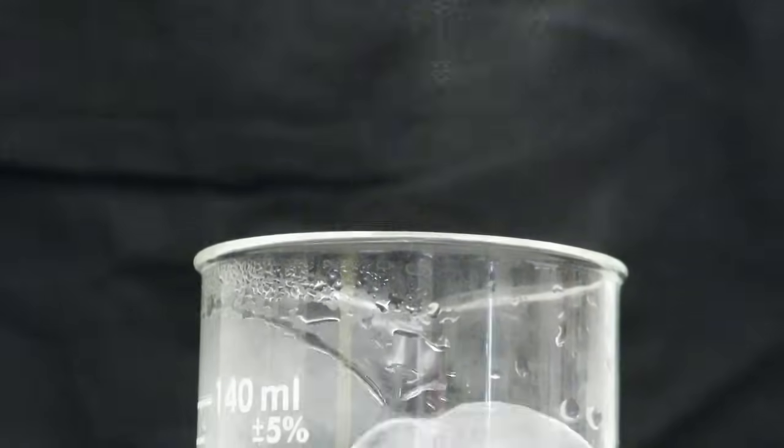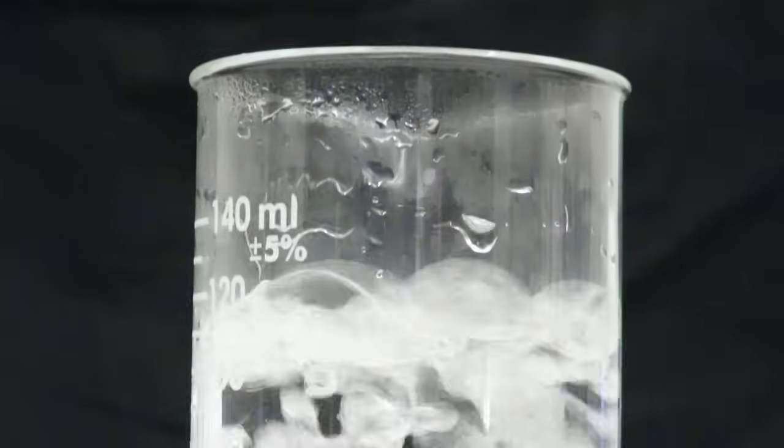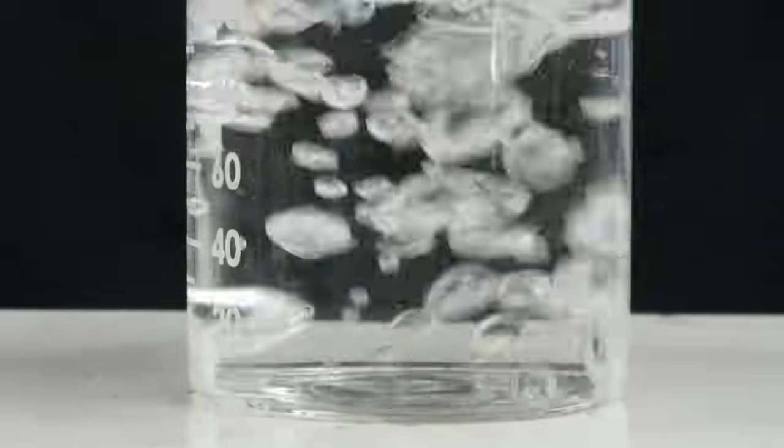One last thing. Different substances have different vapor pressures, and therefore they have different boiling points. This has to do with how strongly the molecules are attracted to each other in the liquid. The more strongly they're attracted, the less the vapor pressure, and it's more difficult to boil. Therefore, the higher the boiling point.